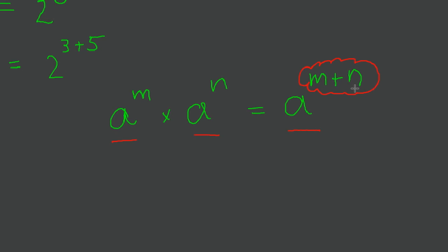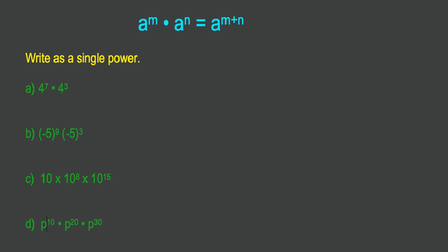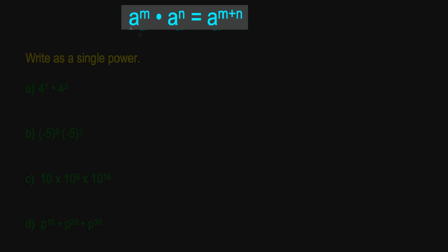Let's do some examples. Looking at these 4 examples, the question says write as a single power. And once again we're keeping in mind the notion that when multiplying 2 powers with the same base, keep the base the same. In other words, don't do anything to that base but add the exponents.